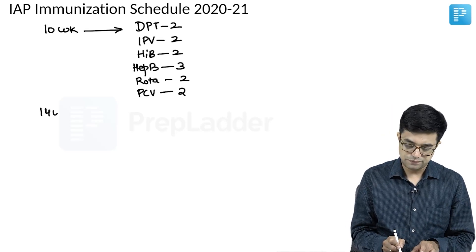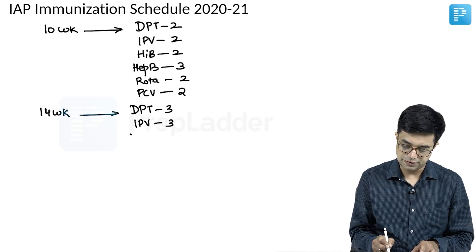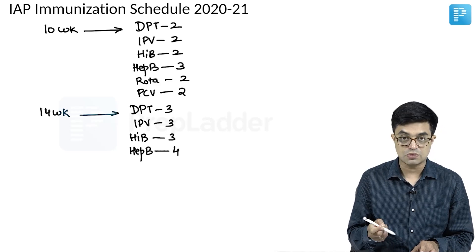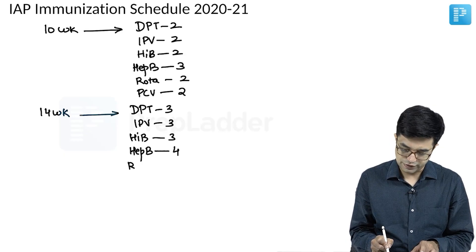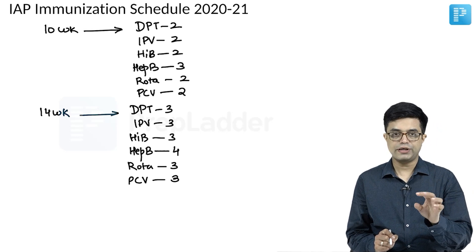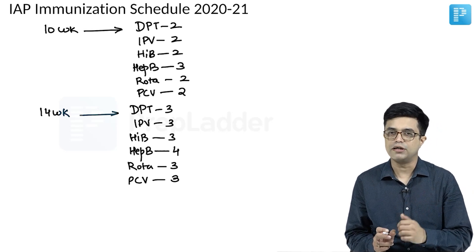Coming to 14 weeks, you will have a very similar schedule: DPT3, IPV3, HIB3, hepatitis B4 — making a total of 4 doses as part of primary vaccination — rotavirus 3, and PCV3. So the schedule runs: birth, 6 weeks, 10 weeks, 14 weeks — the 6, 10, and 14 weeks being very similar to each other.